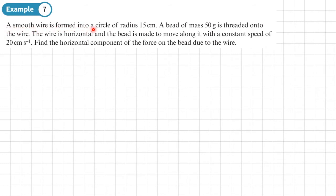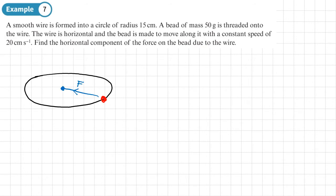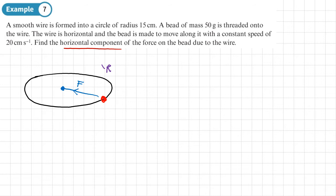Example 7: a smooth wire is formed into a circle of radius 15 centimeters. A bead of mass 50 grams is threaded onto the wire. The wire is horizontal and the bead moves along it at a constant speed of 20 centimeters per second. Find the horizontal component of the force on the bead due to the wire. Since the circular path is horizontal, this force acts towards the center. The vertical component would be the normal reaction, but we're not asked for that.